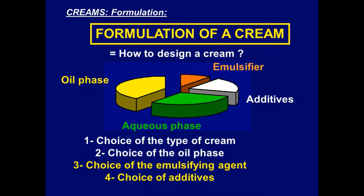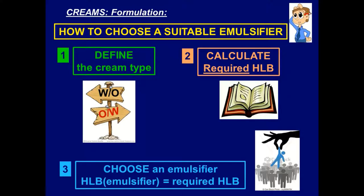We knew how to choose the type of cream, how to choose the oil phase, and we started discussing how to choose the emulsifying agent. To choose a suitable emulsifier, you should follow these three steps: first, define the cream type; then calculate the required HLB; then choose the emulsifier among many different emulsifiers.